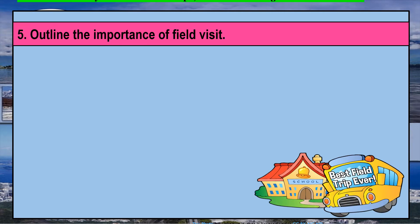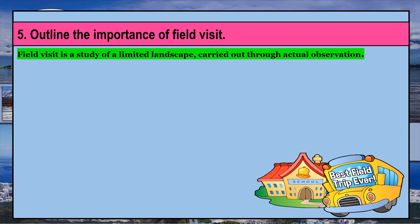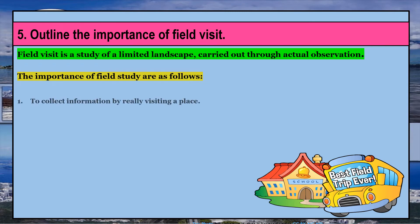The fifth question is: outline the importance of field visit. Field visit is a study of a limited landscape carried out through actual observation. First, it helps collect information by really visiting a place — moving from a typical classroom or textbook environment to practical field knowledge. In short, it provides every student with real-world experiences, whether the trip is to a hospital, a zoo, a garden, museum, or a village. Students are able to create a connection between what is happening at school and in the real world.